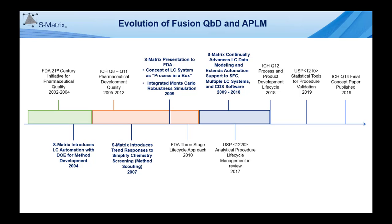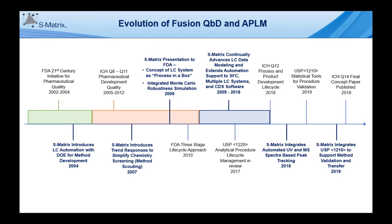Over the next decade, S-Matrix continually advanced LC data modeling and extended LC experiment automation support, including SFC, Agilent and Thermo LC systems, Waters LC systems, and the Chemstation, Chromeleon, and Empower CDS software. In 2018, S-Matrix introduced Peak Tracker, our new integrated technology for automated UV and MS spectra-based peak tracking. And in 2019, S-Matrix integrated the USP 1210 tolerance and prediction interval calculations and reporting to correctly combine method accuracy and precision into a single, robust system suitability performance metric.